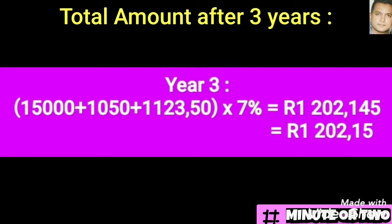For the third year, the answer is presented as follows — the principal amount, plus the first year's interest, plus the second year's interest — and this is how you get the concept of compounded interest. Then I find the percentage of that total amount and arrive at R1,202.15. Note that I've rounded it off because we're working with money, and it's important to round to two decimal places.